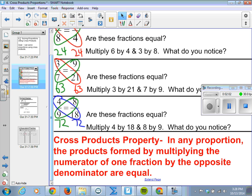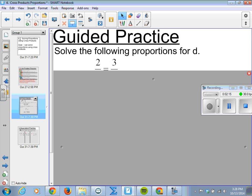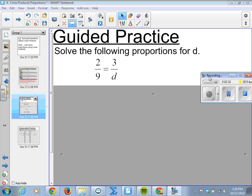Any proportion, the products formed by multiplying the numerator of one by the opposite denominator are equal. So, we're going to solve this proportion for d. We have 2 9ths equals 3 over d. Now, I think one of our methods we learned before. We can't get from 2 to 3 easily, and 2 9ths is already in lowest terms. So, we're kind of stuck. So, we're going to use this cross-products method.